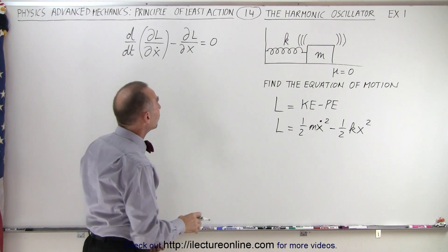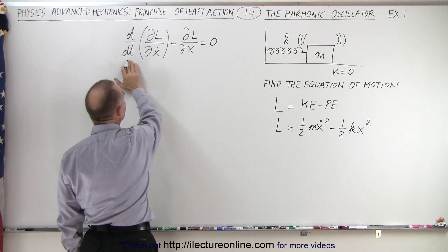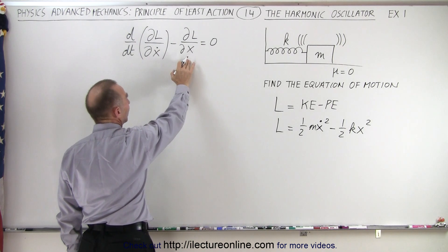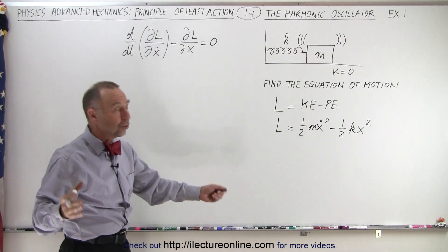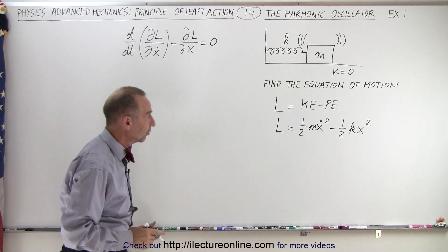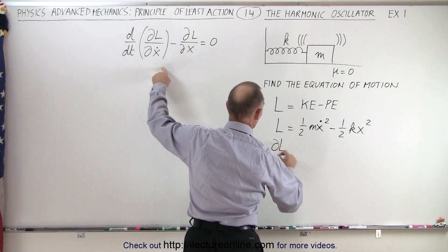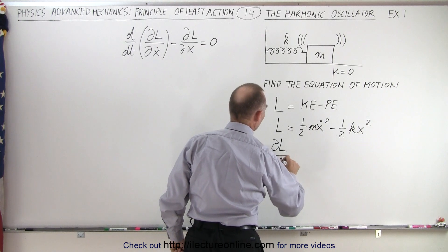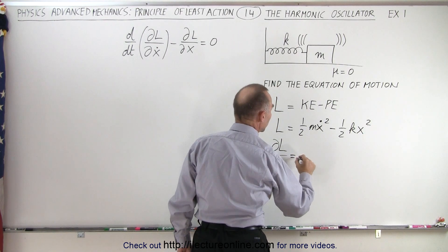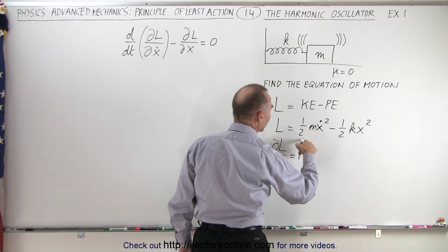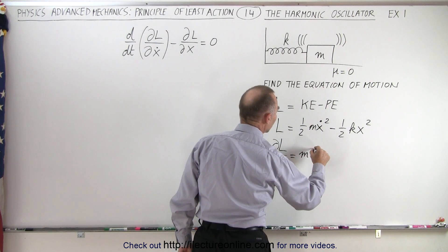Now we need to find the partial of L with respect to x-dot, then take the derivative with respect to time, find the partial of L with respect to x, subtract the two, and set them equal to zero to get the equation of motion. First, let's take the partial of L with respect to x-dot. There's no x-dot in the potential energy term, only in the kinetic energy term, so that gives us two times one-half, which is one, times m times x-dot to the first power — so just m x-dot.